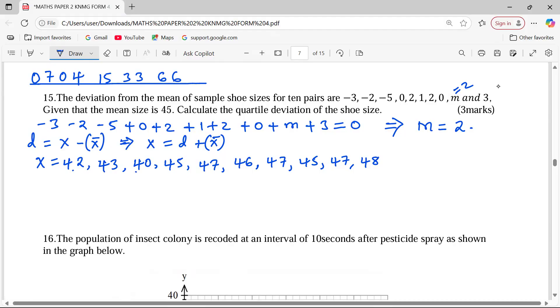According to the deviations and the mean. 1, 2, 3, 4, 5, 6, 7, 8, 9, 10. Yeah, 10 pairs of shoe sizes. So with this, if we want to calculate the quartile deviation, we are supposed to arrange the shoe sizes. We are supposed to arrange them.